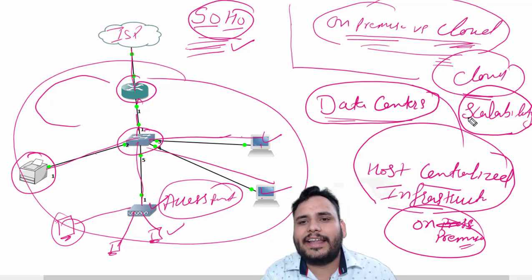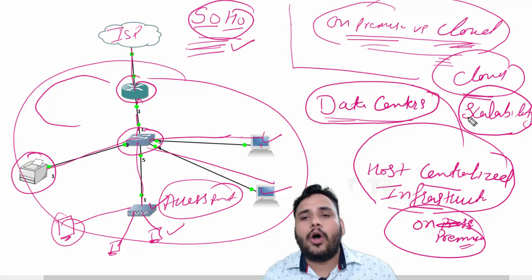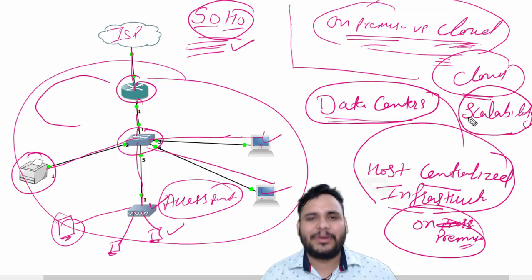So this is the SOHO architecture and this is the difference between on-premises versus cloud architecture. Thank you so much.